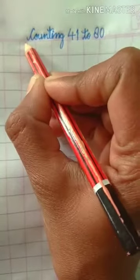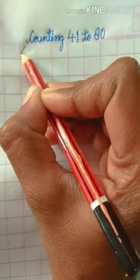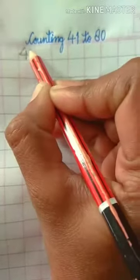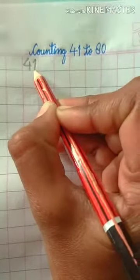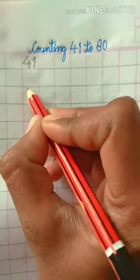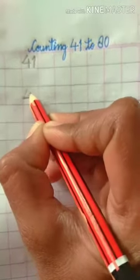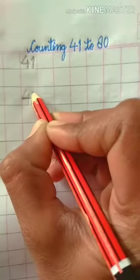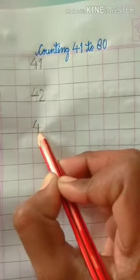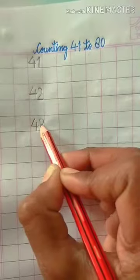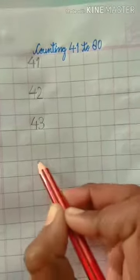First of all, write number 41. 4, 1, 41. 4, 2, 42. 4, 3, 43.